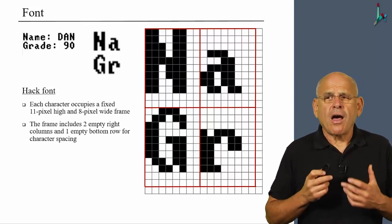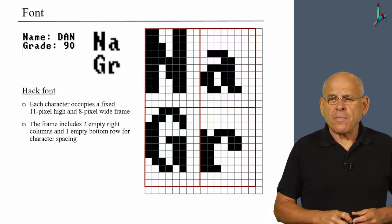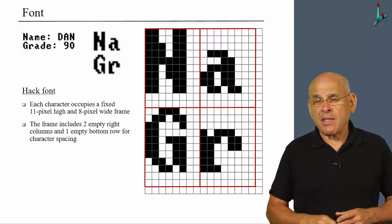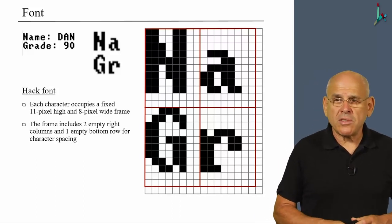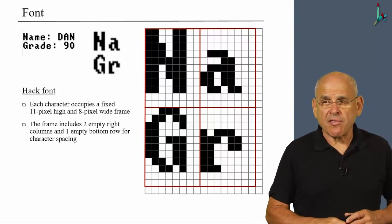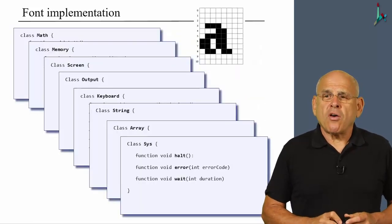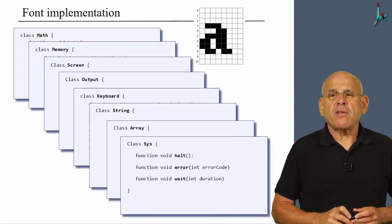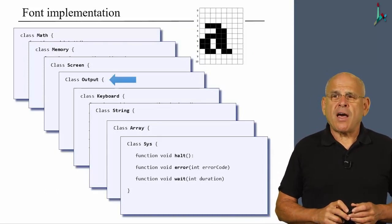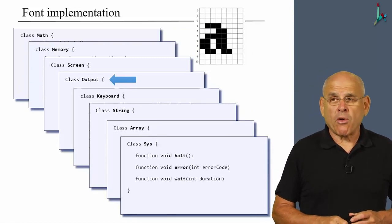All right, now, how should we implement this font? Well, the bad news, once again, is that it's a lot of work. And the good news is that we did it for you, and we don't expect you to do it yourself. Because it's rote work, and we don't want you to do rote work. So we implement this font using the output class that we are going to explore next.